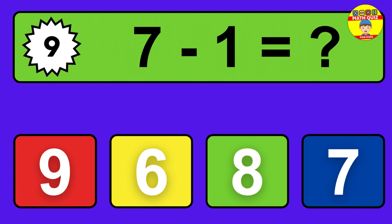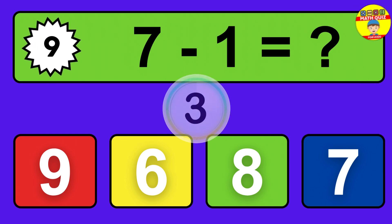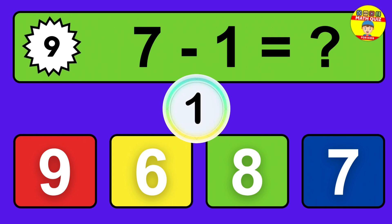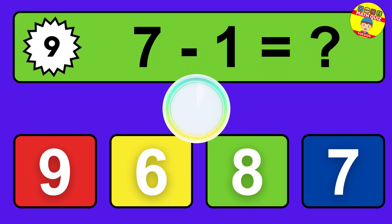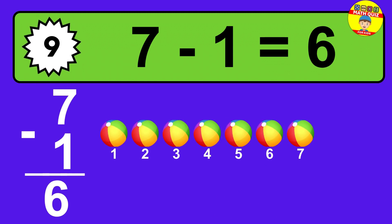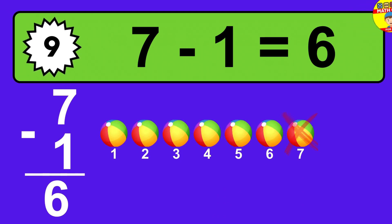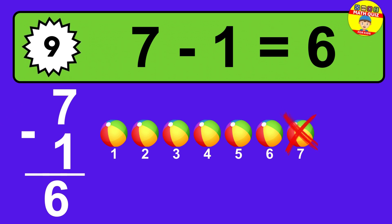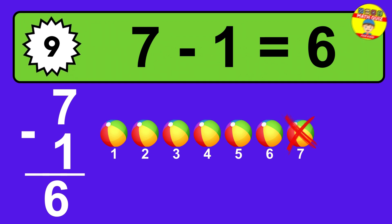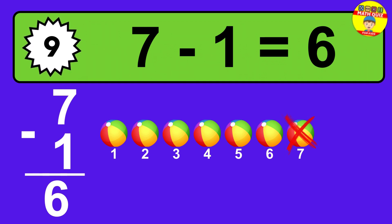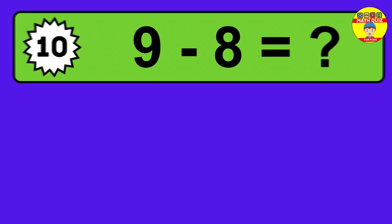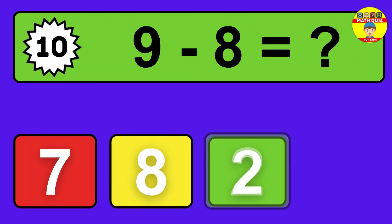Question nine: seven minus one equals what? The answer is seven minus one is six. Let's count it. One, two, three, four, five, six.